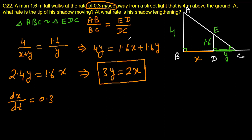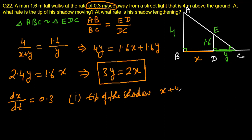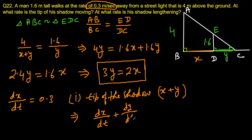The tip of the shadow is always at a distance of x plus y from the lamppost. So the rate at which the tip is moving is d(x + y)/dt, which equals dx/dt plus dy/dt. We need to find this value.